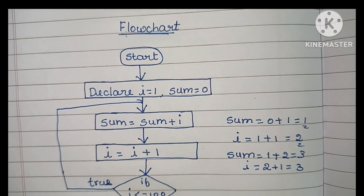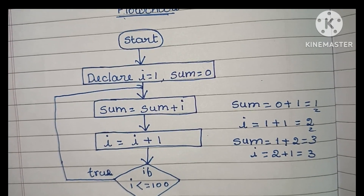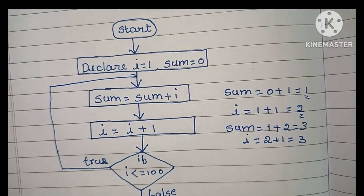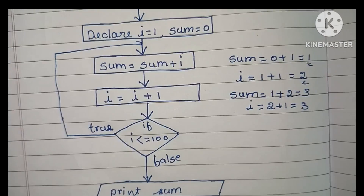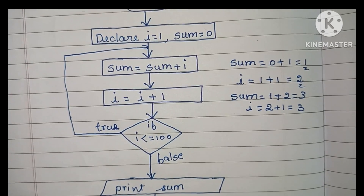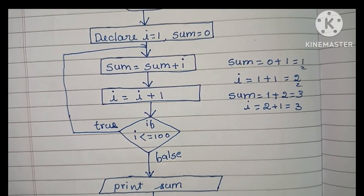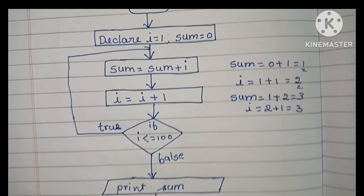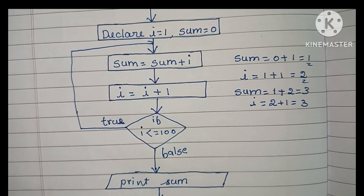So this is the flowchart to find the sum of the first hundred natural numbers. It starts with a START statement inside an oval. Then we declare i = 1 and sum = 0 inside a rectangular shape. Next, the process calculation — sum = sum + i — is also written inside a rectangular shape, because in a flowchart calculations are always done within a rectangular shape.